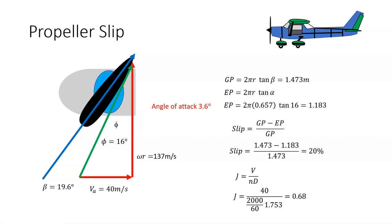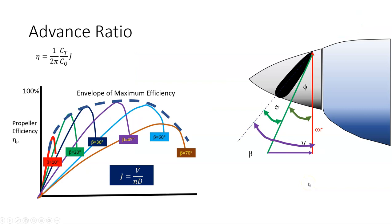The advance ratio is v over nd. We said the velocity was 80 knots, which is about 40 meters per second. The RPM was 2000, so n is 2000 divided by 60, that's revs per second, and the diameter is 1.753. That gives me an advance ratio of 0.68.